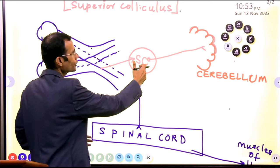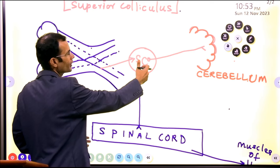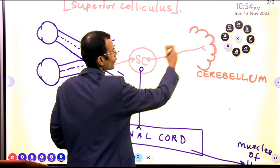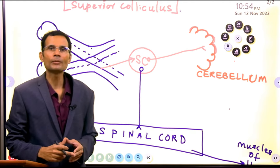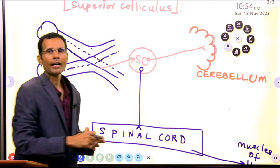And visual input conveyed to the superior colliculus. And then from the superior colliculus, another tract sends the signals to the cerebellum. This is tectocerebellar tract.